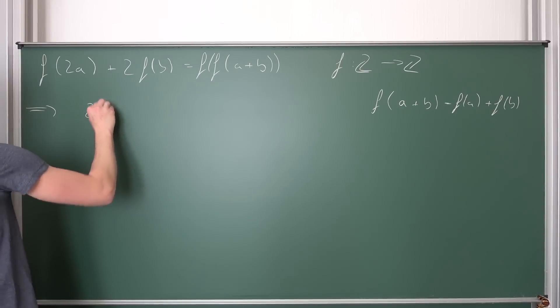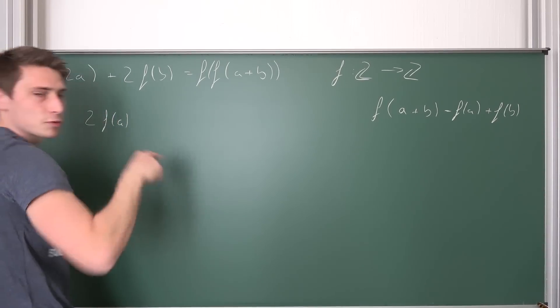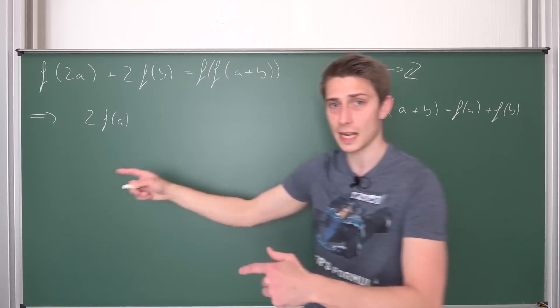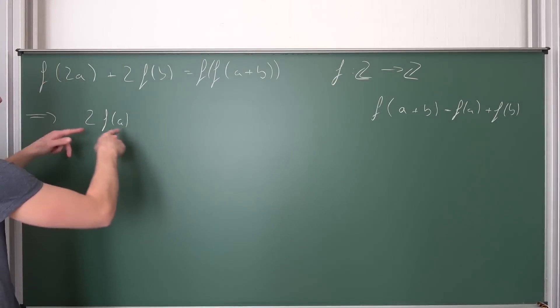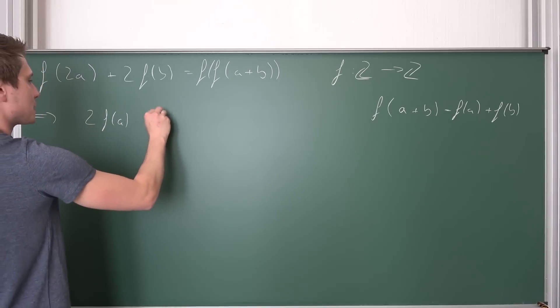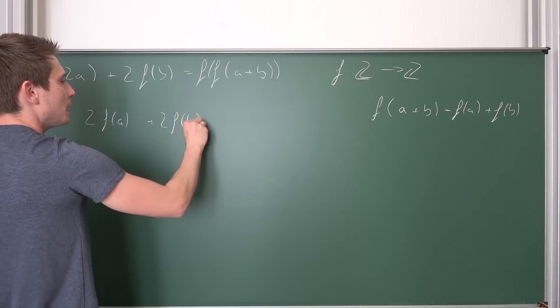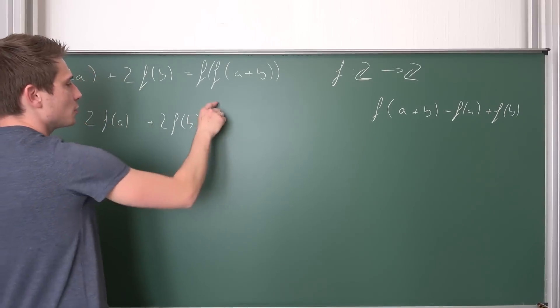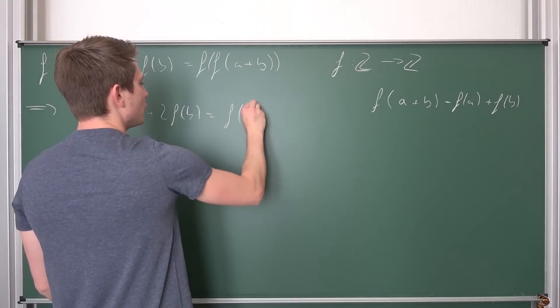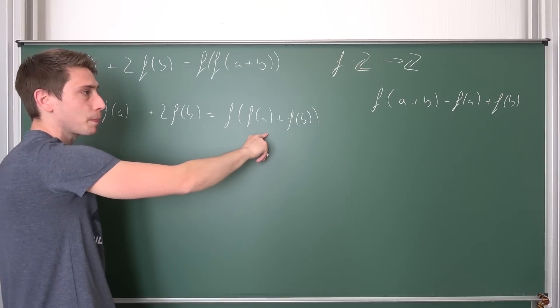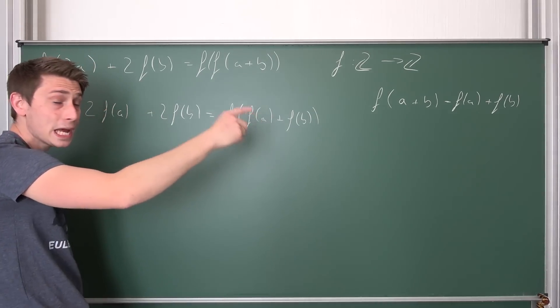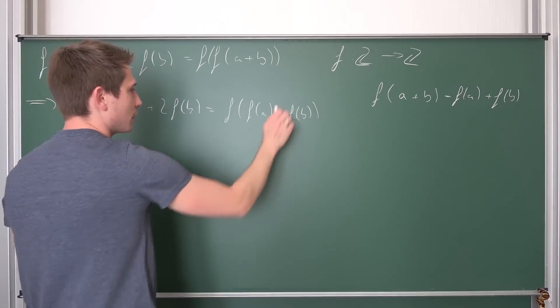Then we are going to get 2f(a). I hope you can see where this comes from. This is f(a+a), this is the same as f(a) + f(a) since it's a homomorphism. This is 2f(a) + 2f(b) being equal to this is going to give us f of f(a) + f(b), which is the same as f(f(a)) + f(f(b)) since we are going to have a homomorphism.